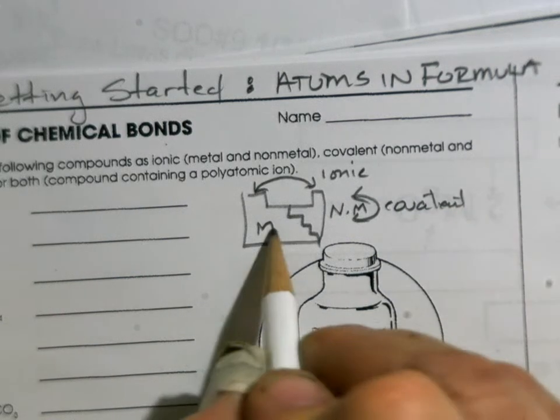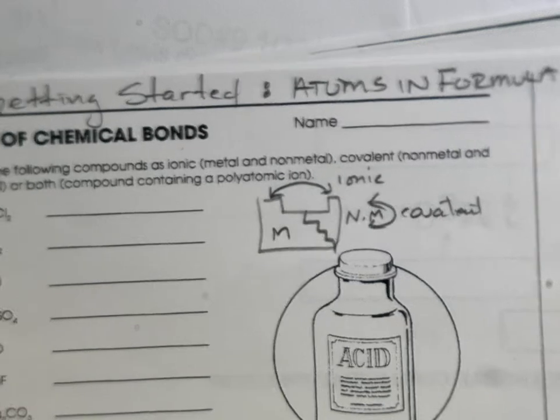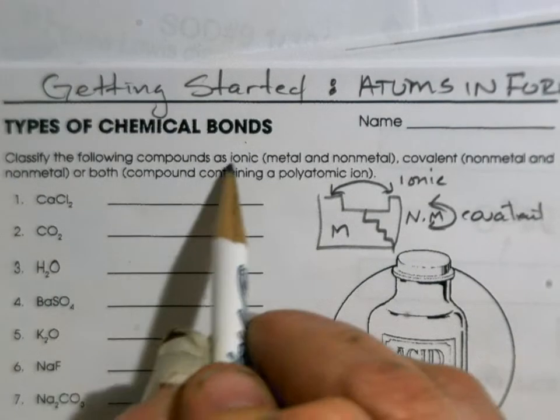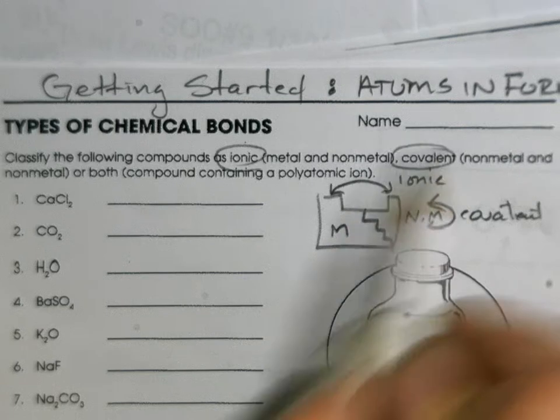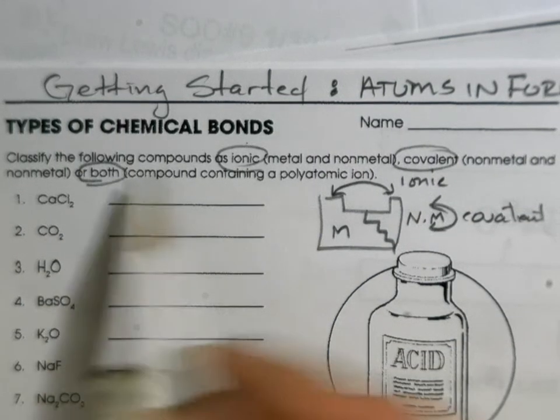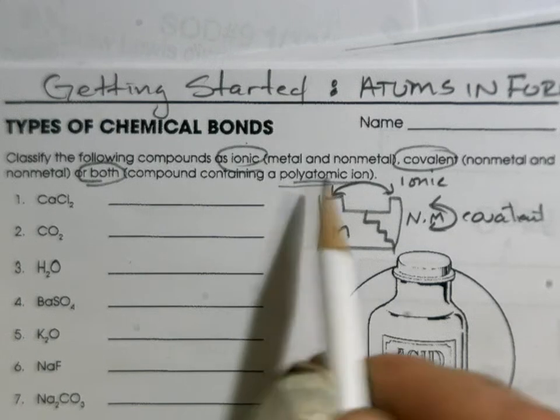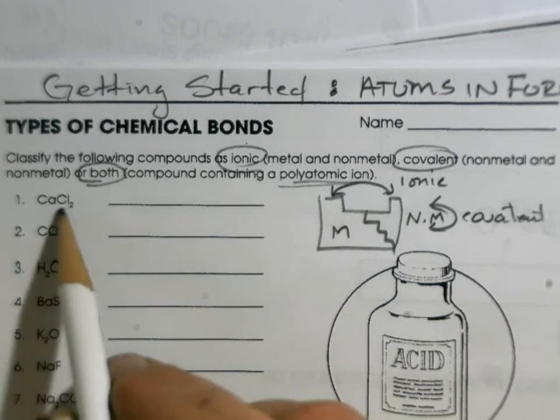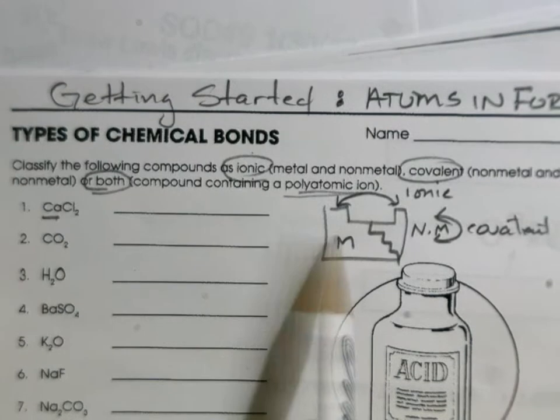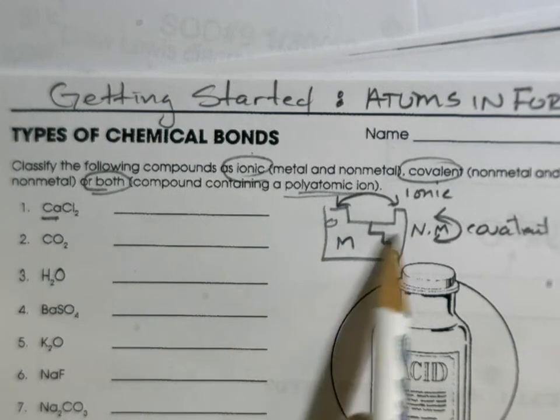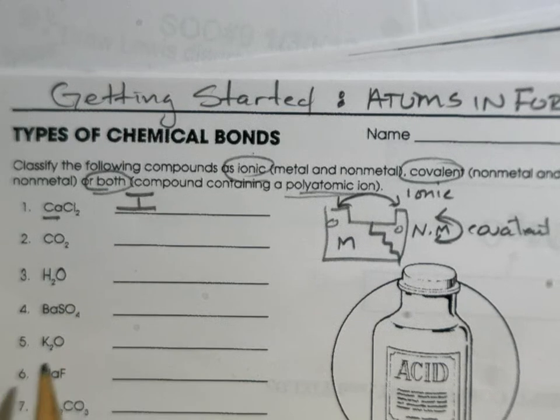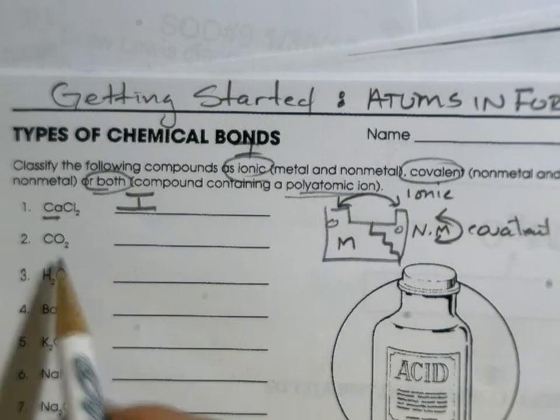There's also when metals bond to metal - metallic - but I don't think we have any on this chart. For this one, you just need to take a look. The directions say to label them either as ionic or covalent, and then here they're saying 'both,' which means it's got a polyatomic ion in it. The polyatomic ions are always covalently bound. So you've got calcium, which is a metal, and chloride over here, so that's definitely going to be ionic. I'm just going to put a capital I on there to abbreviate it.